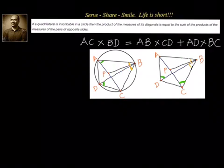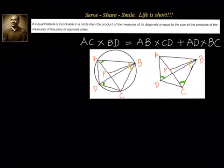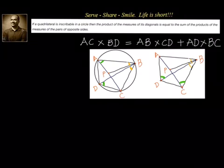Why have we done that? We want to prove this using the similarity criterion. To use the similarity criterion, we need two angles. One angle we can get from the 'angles in the same segment are equal' theorem, but we need one more angle. To get that, we are dividing angle B such that angle ABP equals angle CBT, so we can now identify a couple of similar triangles to leverage.